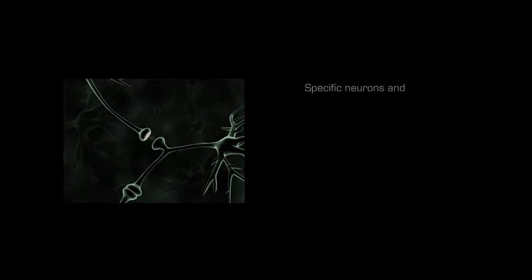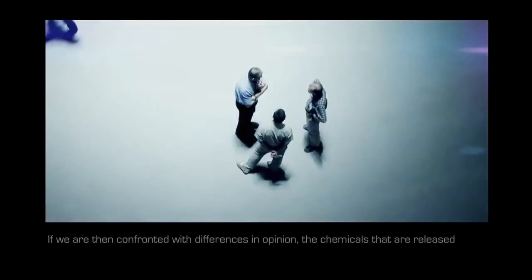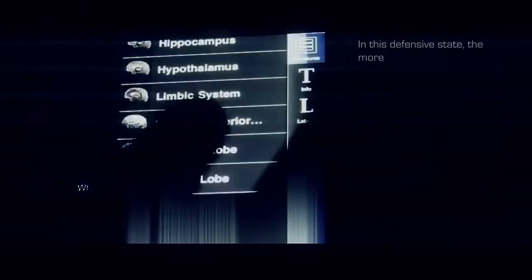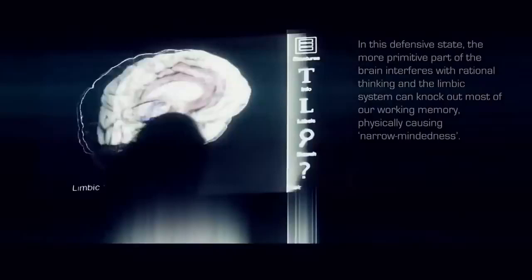Specific neurons and neurotransmitters such as norepinephrine trigger a defensive state when we feel that our thoughts have to be protected from the influence of others. If we are then confronted with differences in opinion, the chemicals that are released in the brain are the same ones that try to ensure our survival in dangerous situations. In this defensive state, the more primitive part of the brain interferes with rational thinking, and the limbic system can knock out most of our working memory, physically causing narrow-mindedness.